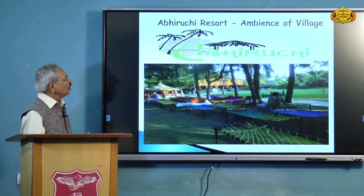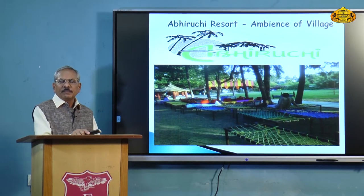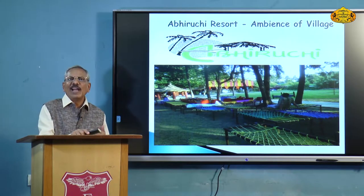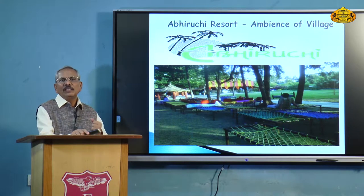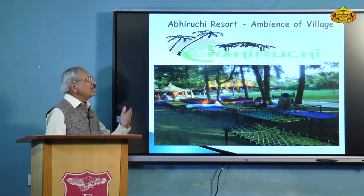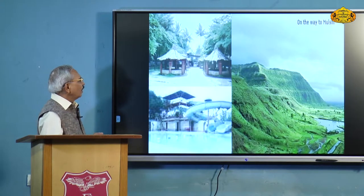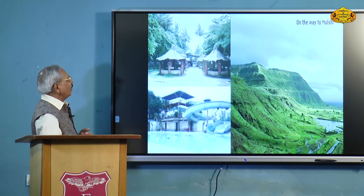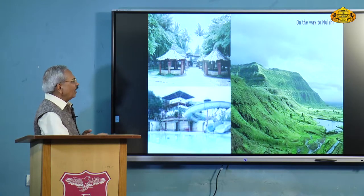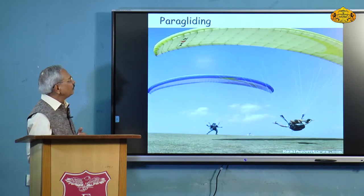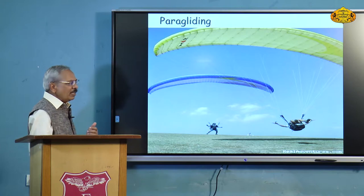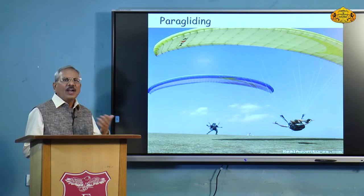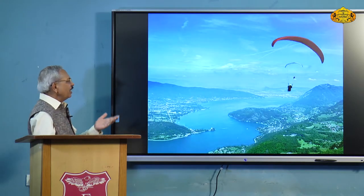An example is Abhiruchi Resort, which offers the ambience of a village. In a crowded city with high pollution — noise, water and air pollution — people prefer to go on weekends to get the feel of a village and enjoy fresh air. Water parks, dams, valleys, and paragliding are all experiences that people seek, wherein adventure and thrill along with joy are available. Youngsters are attracted in large quantities to such experiences available in the market.